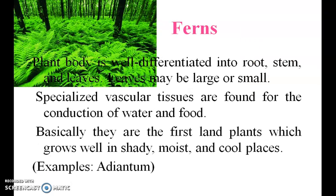The plant body is well differentiated into root, stem, and leaves. Leaves may be larger or smaller. Specialized vascular tissues are present for the conduction of water and food. They are the first land plants, which grow well in sandy, moist, and cool places. An example is Adiantum.